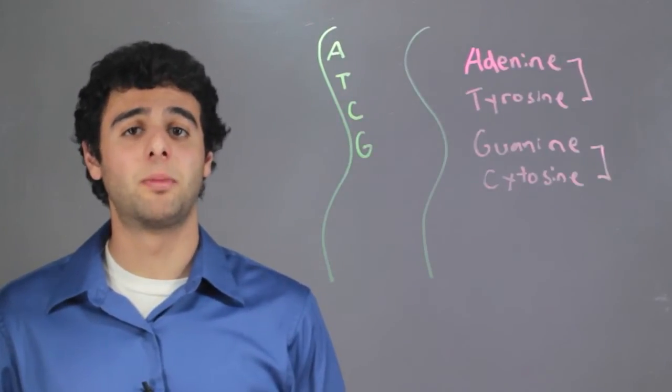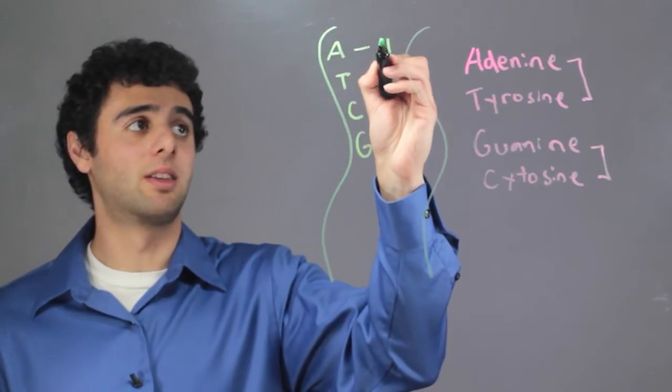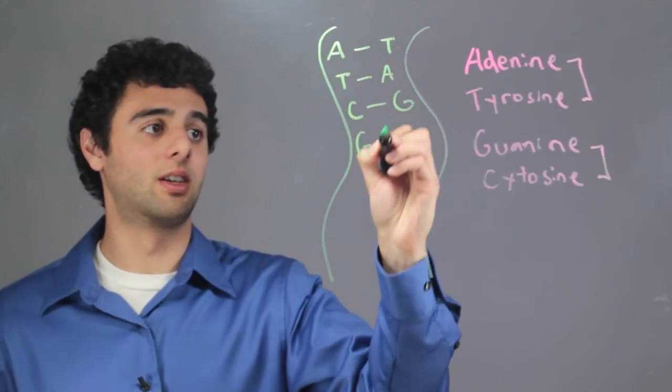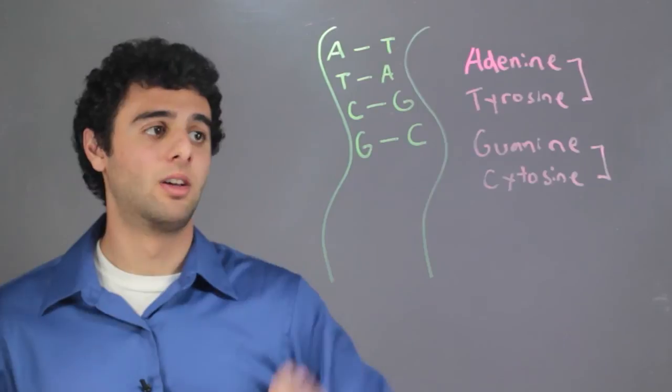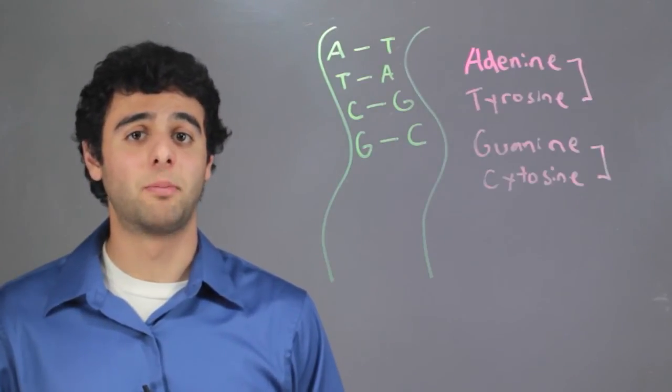For a strand to be complementary to another strand, every A has to be bound to a T, every T bound to an A, every C bound to a G, and every G bound to a C. So, this is what's meant by complementary DNA.